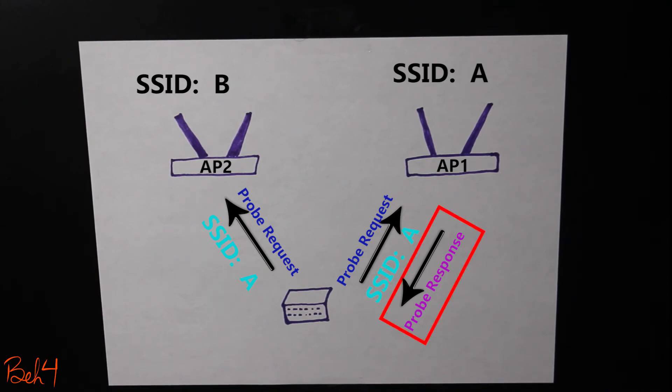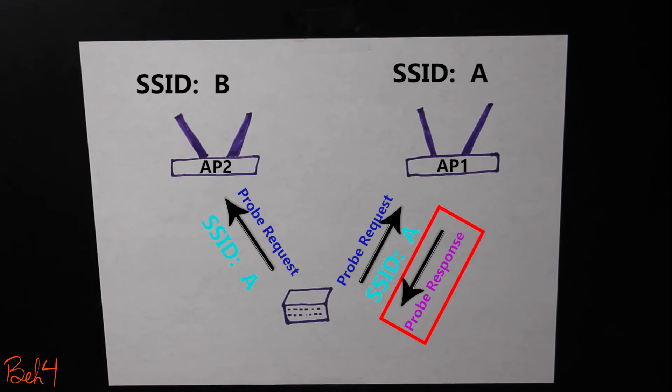The probe response frame is very similar to a beacon frame and it contains all the necessary information that the client requires to know before it can join the network. Afterwards, there's going to be an authentication step followed by an association step. Only then they can start transferring data.